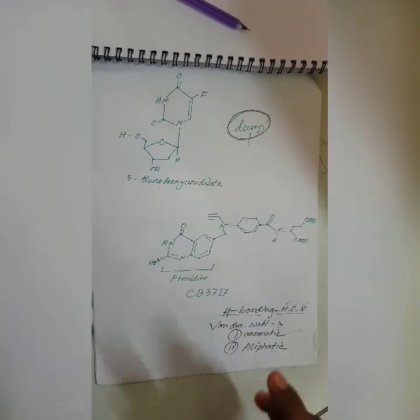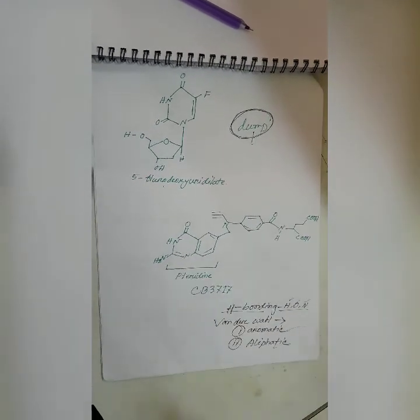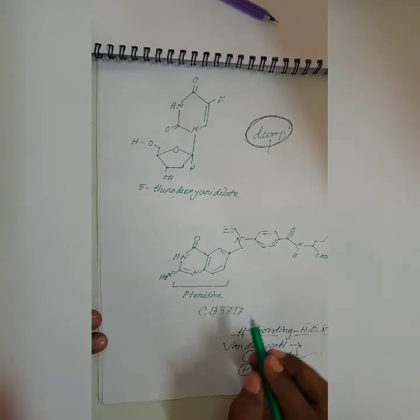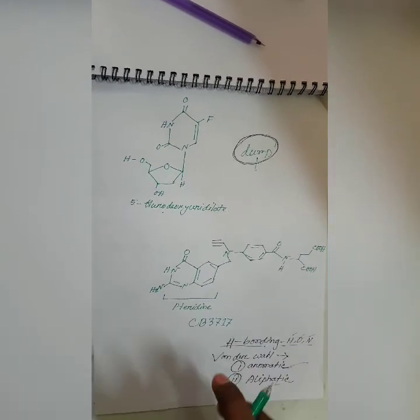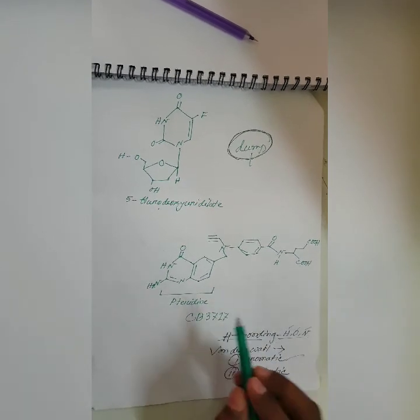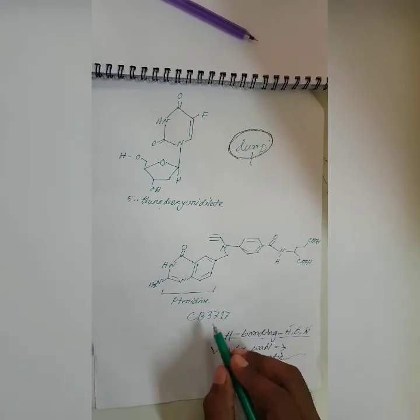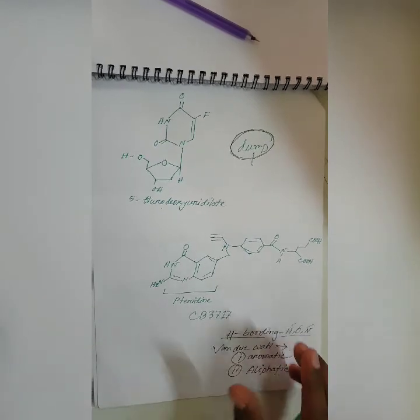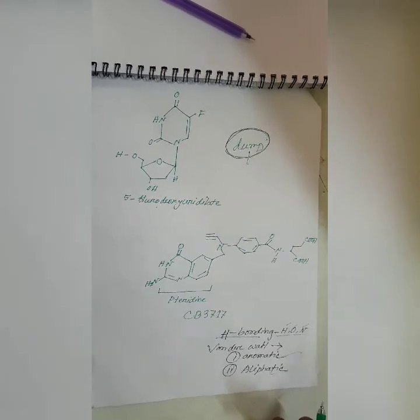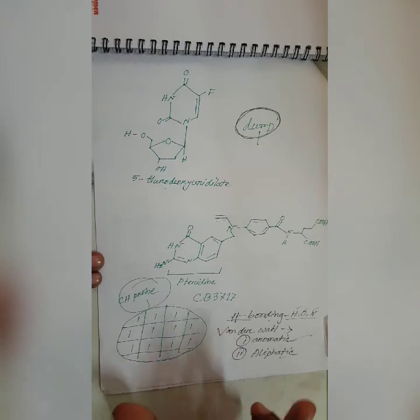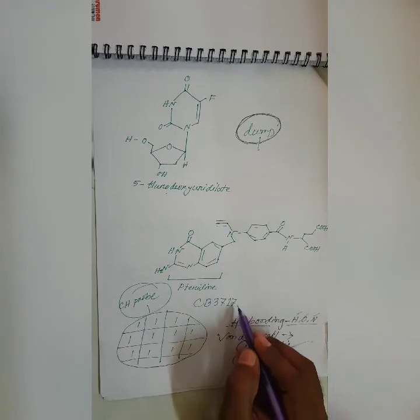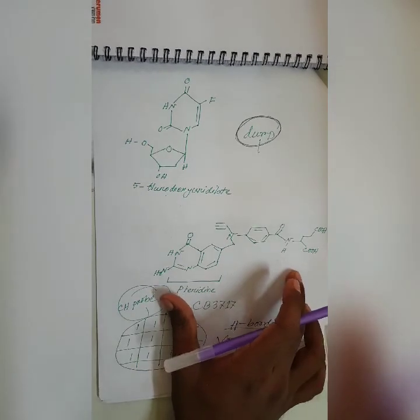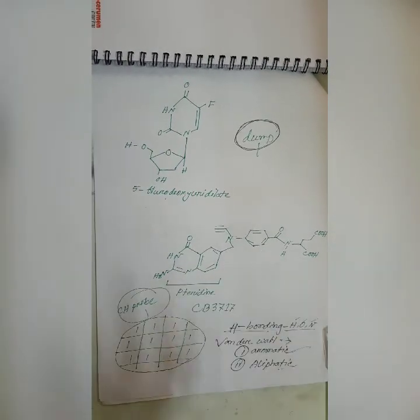This is a de novo drug and this is a computer-based drug. This is a CB3717-based inhibitor. The major problem with CB3717 is that it is nephrotoxic — it has nephrotoxicity. However, water solubility can be increased. The new drug design is a computer-based drug design using the CB3717 crystal structure.